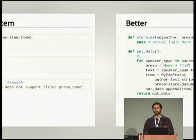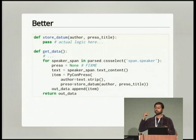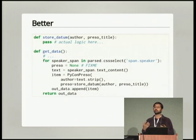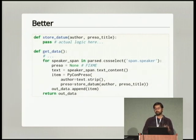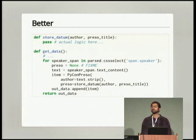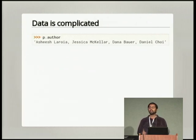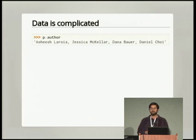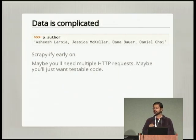We can marginally refactor the code so that instead of calling store_datum inside the data extraction part, we return a list of all the items we found. Then you have a separate function that loops over the return value and passes them one by one to store_datum. But the truth is scraping is somewhat complicated and brittle. If you look at the scrape results, at least one of the talk titles in this year's PyCon contains more than one author — so now you have not just a specification bug, but an actual bug in the code.